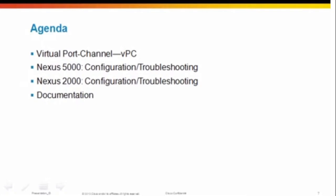Thank you, Dan. Welcome, everyone. In today's agenda, we will be covering the following: virtual port channel, Nexus 5000, and the Nexus 2000 series. I'd like to quickly mention the wording I'll be using. You'll see me use Nexus 5000, or 5000, or 5K. For the 2000, you'll hear it referred to as Nexus 2000, 2K, or fabric extender — and also FEX. I'll mainly use the FEX word.